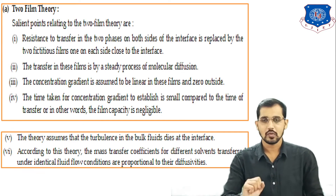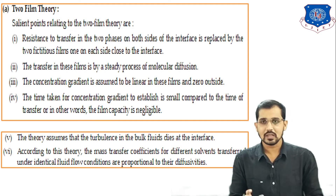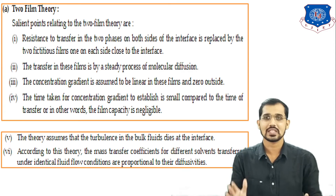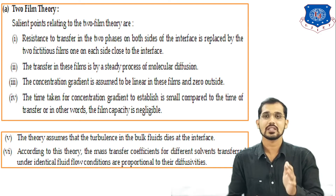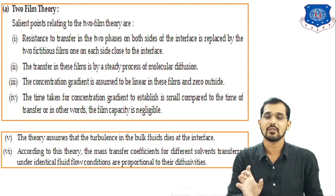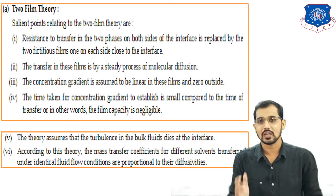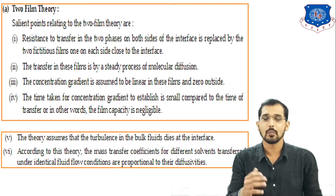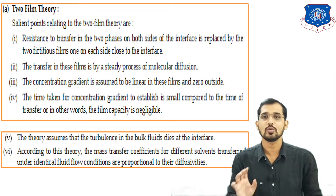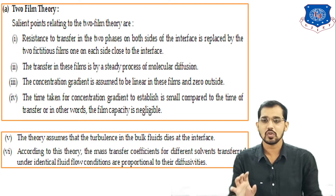First theory is two film theory. According to two film theory, we consider two phases — liquid phase and gaseous phase — separated by an interface. Across the interface, two films are available: a gas film and a liquid film. There is a different mass transfer rate across the films and in the bulk part of the phases. Resistance to transfer in the two phases on both sides of the interface is replaced by two fictitious films, one each side at the interface.